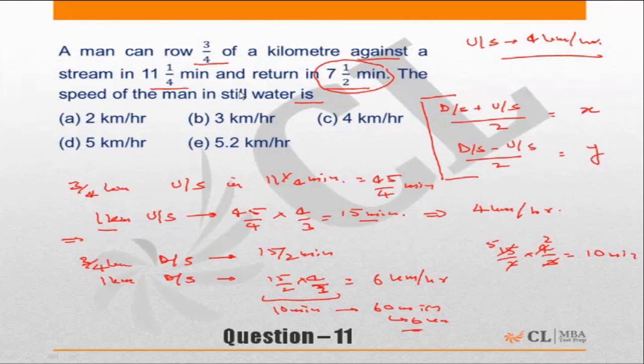Another thing which could have been visible to you is 11 1/4 is 1 1/2 times 7 1/2. So if the upstream speed is 4 kilometers per hour, downstream speed should be 4 times 3/2, which equals 6 kilometers per hour.